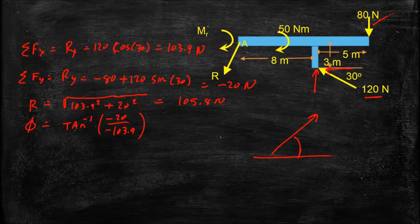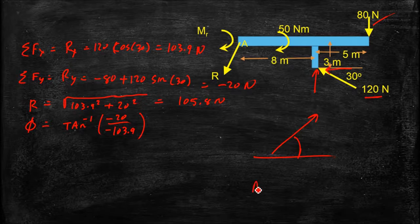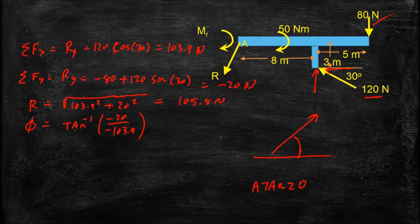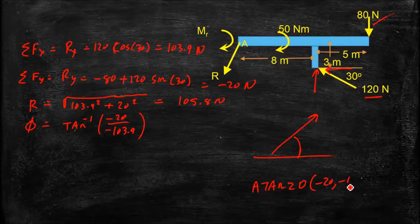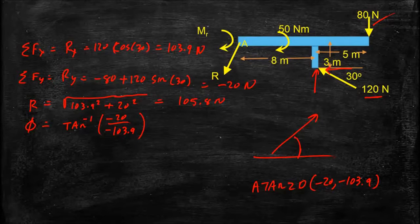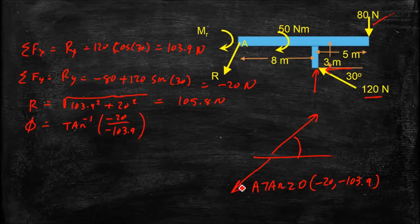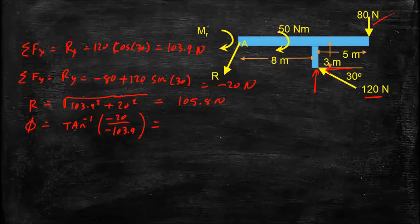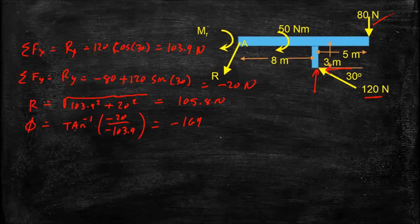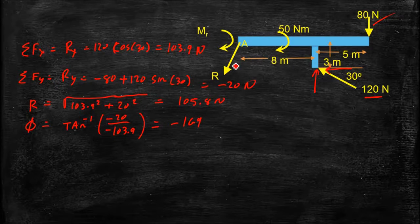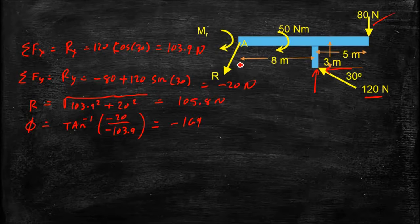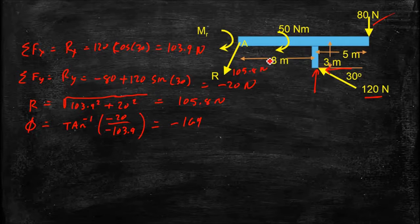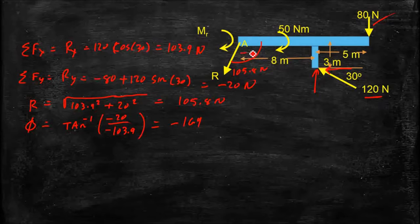On your calculator, or in MATLAB, like I did it, there's a command in MATLAB, atan2, and since we're using it in degrees, I'll say D, atan2D, where I give it the minus 20 and minus 103.9. And it will calculate the angle such that the vector points in the correct quadrant. So that gives me an angle of minus 169 degrees, if I did everything correctly. So up here, I can label my resultant force here as having the magnitude of 105.8 Newtons, and an angle here of minus 169.